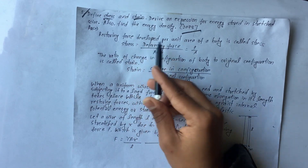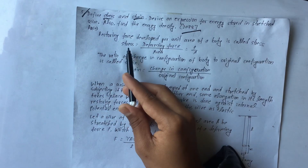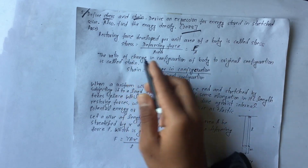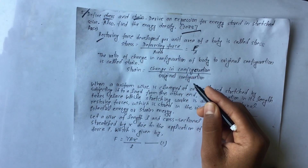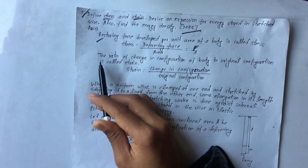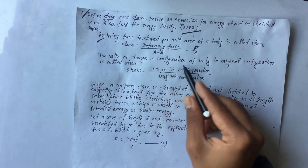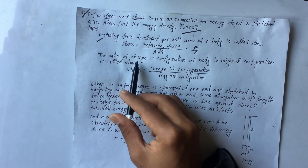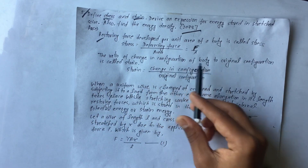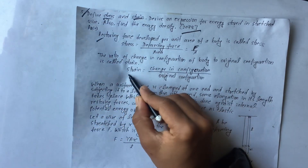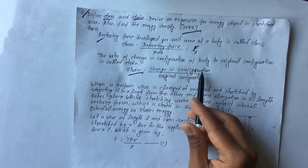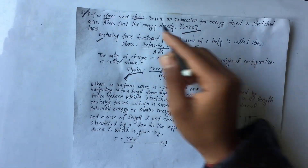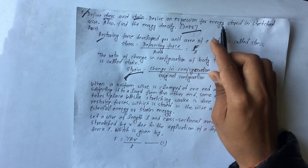Stress is equal to F by A. Now define stress. Definition of strain: the ratio of change in configuration of a body to its original configuration is called strain. Strain is equal to change in configuration divided by original configuration. This is the strain definition.